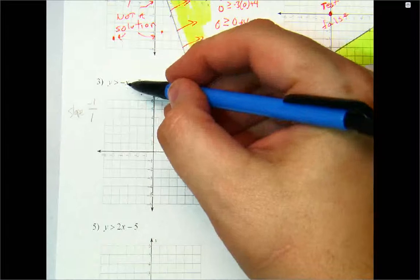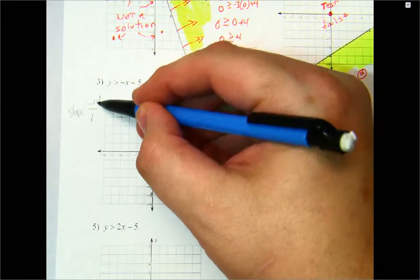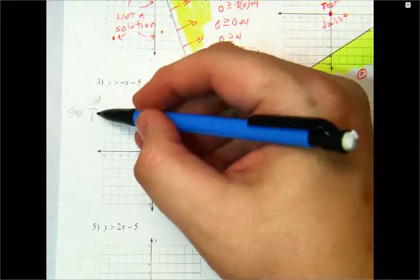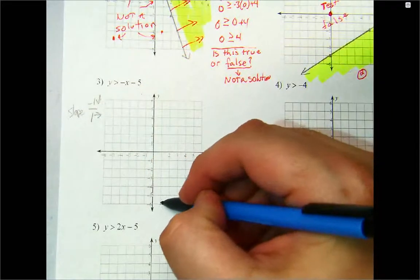If you just see like negative x, we're going to use negative one over one. That tells us to go down one and right one. So down one, right one.